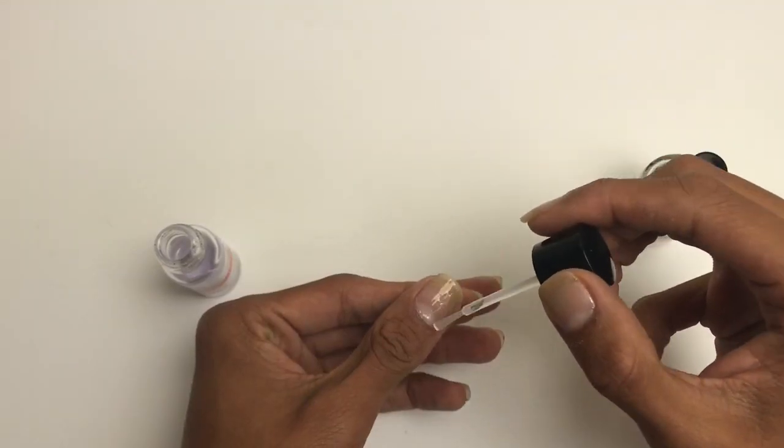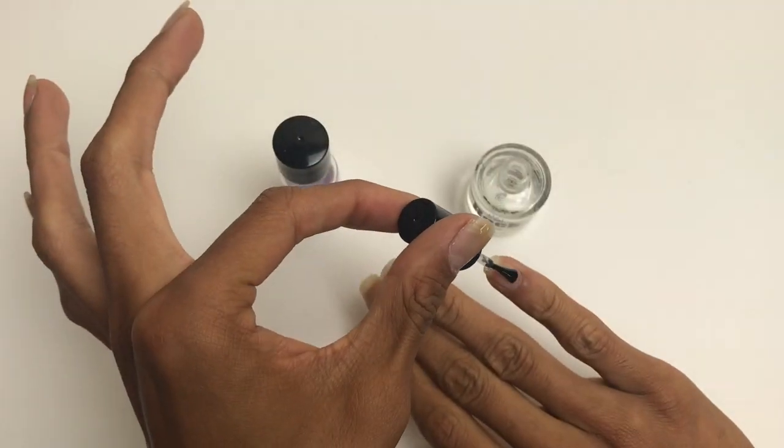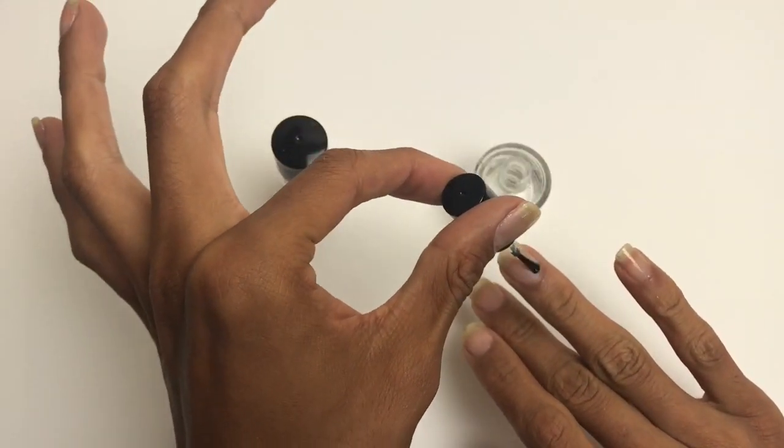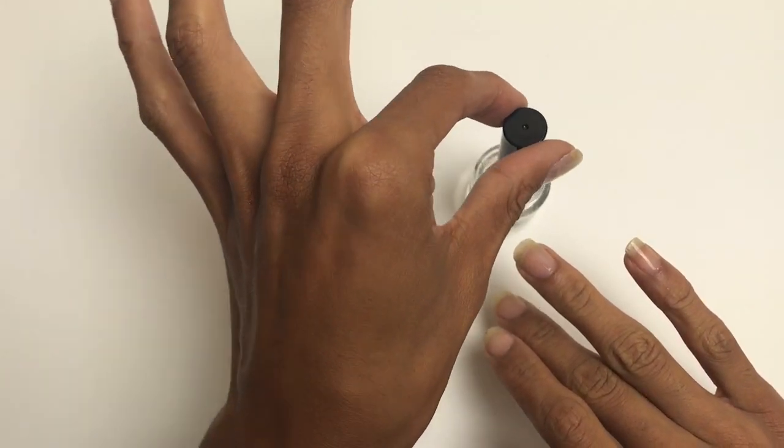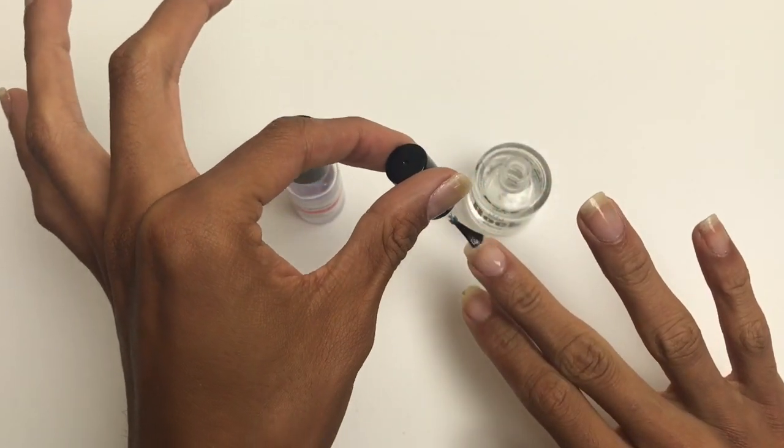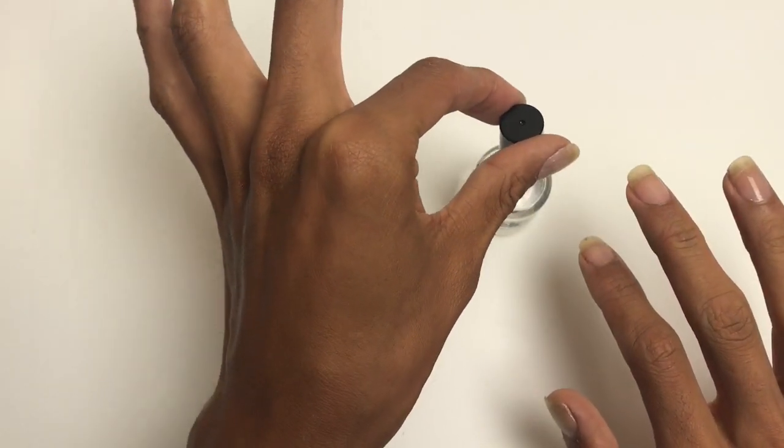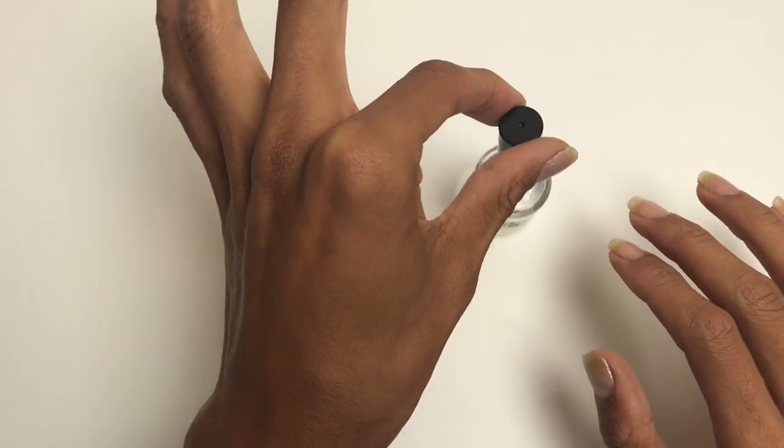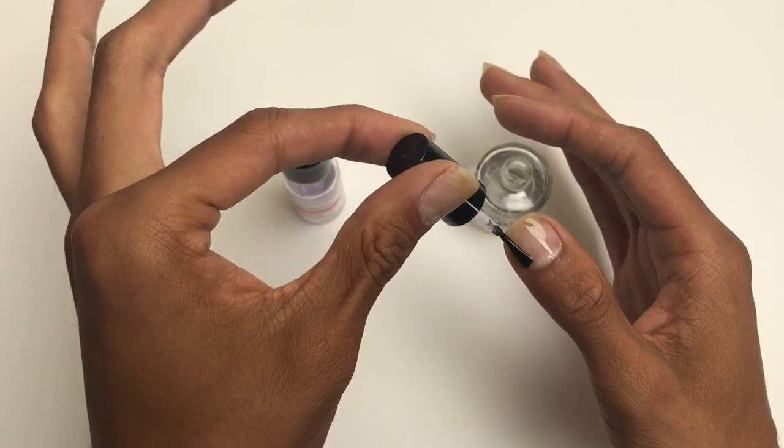Now I'm applying the European Secrets Rock Hard Extreme Nail Strengthener to the right hand. This one is a thicker formula, so I needed to dip the brush a few more times than with the Sally Hansen. Coating the nails in one layer.